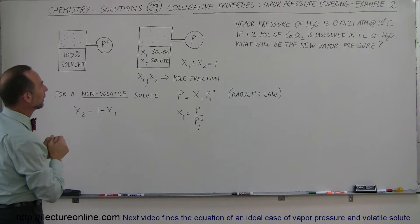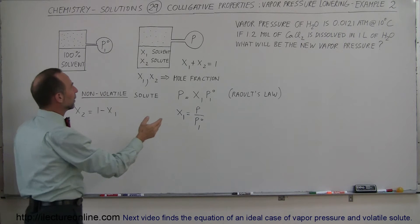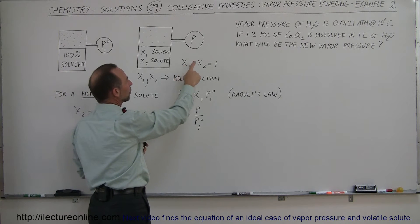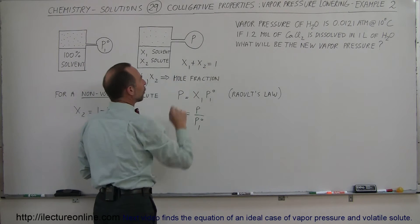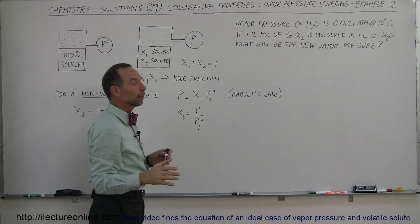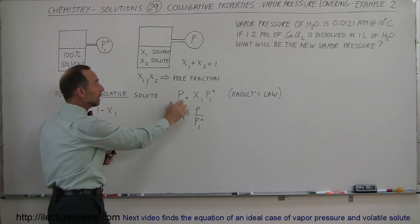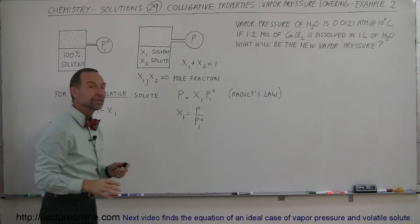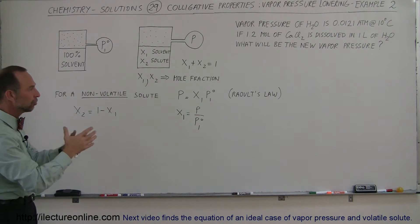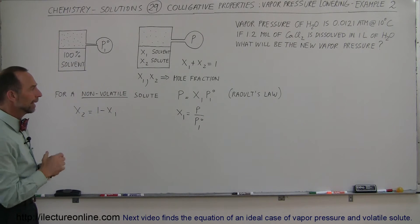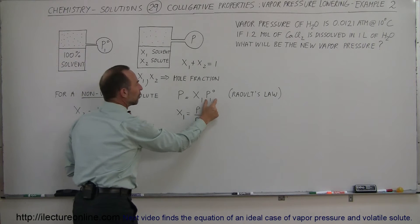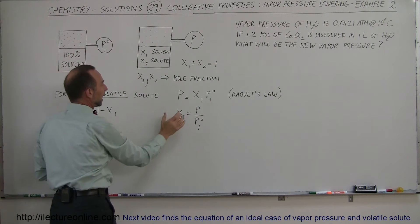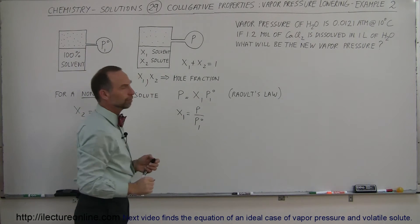One way to figure that out is to realize that if we add the fraction of the solvent plus the fraction of the solute, we get the whole thing. In order to find the new pressure, we need to find the mole fraction of the solvent in this new solution, then simply multiply that times the original vapor pressure of the solvent at 100%, and that will be the new vapor pressure.